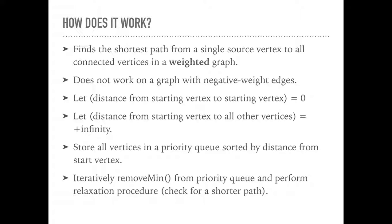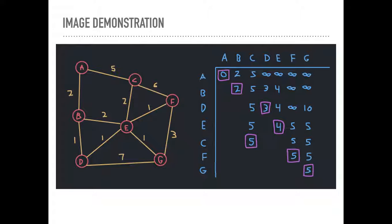We're going to store all of the vertices in a priority queue sorted by distance from the start vertex. So the minimum element is going to have the shortest distance to the start vertex and the maximum element is going to have the maximum distance. This priority queue is implemented using a heap. That will be important for our running time analysis. So we're going to iteratively remove the minimum vertex from the priority queue and perform the relaxation procedure, which is where we check for a shorter path. So this will become more clear during this image demonstration.